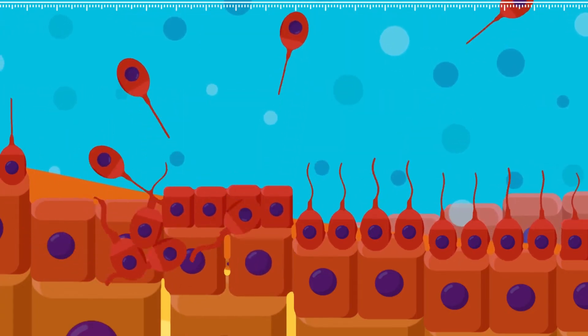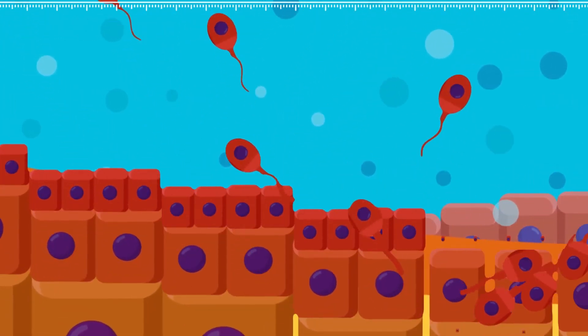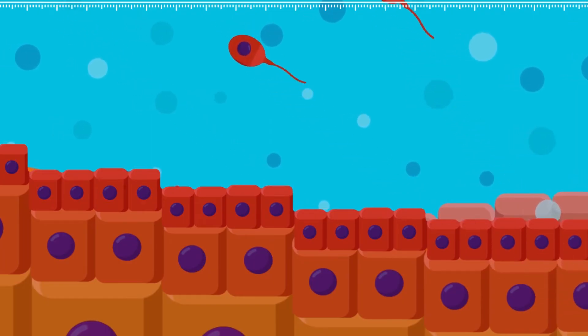What is meiosis? Meiosis is a process where a single cell divides twice to produce four cells containing half the original amount of genetic information.